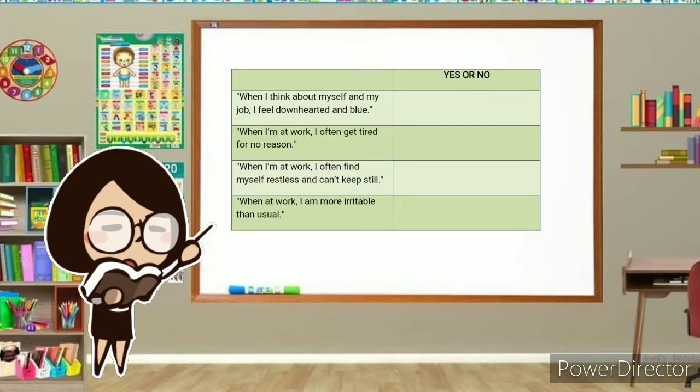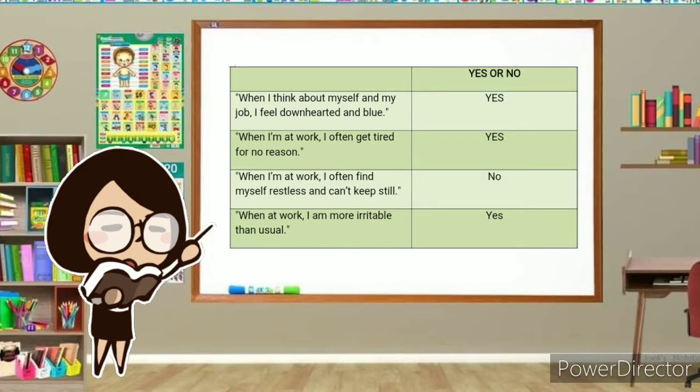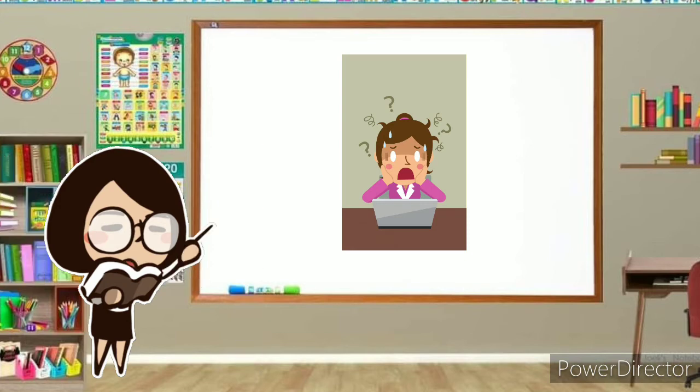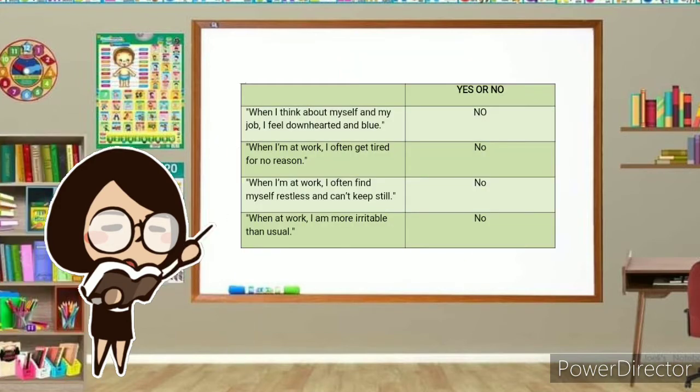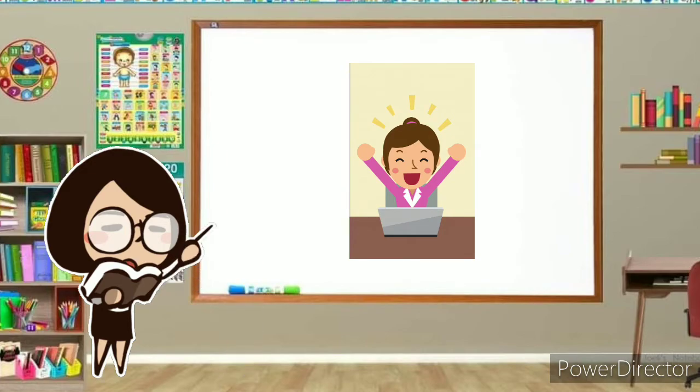To create an Index of job-related depression, the researcher would simply add up the number of yes responses for the four questions above. For example, if a respondent answered yes to three of the four questions, his or her Index score would be three, meaning that job-related depression is high. If a respondent answered no to all four questions, his or her job-related depression score would be zero, indicating that he or she is not depressed in relation to work.